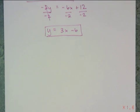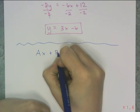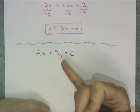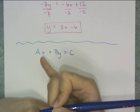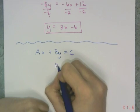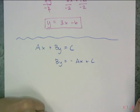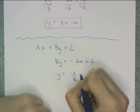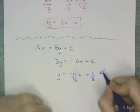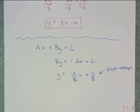We can actually change standard form into slope intercept with a formula, going with Ax plus By equals C, and then transforming this to y equals. Remember I said it's always the same two steps: you subtract off the x term, so you get By equals negative Ax plus C, and then you divide by B. So then you get y equals negative A over B times x plus C over B. And this is now slope intercept.